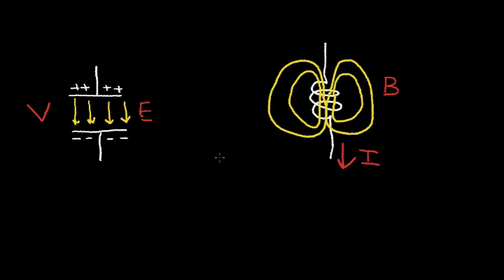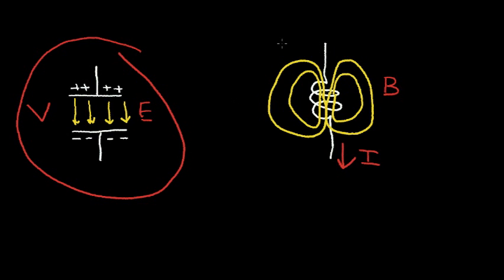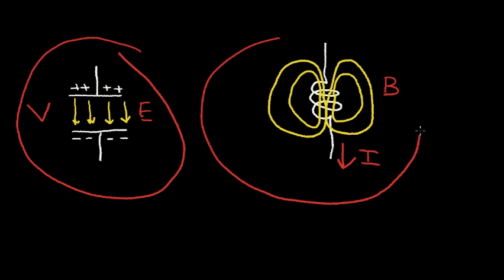So the role of voltage and current is reversed between the capacitor and the inductor. To create energy in the capacitor, I apply voltage; to create energy in the inductor, I apply current. You've probably heard the word electromagnetic — the electrical part of that word comes from the capacitor, and the magnetic part comes from the inductor.